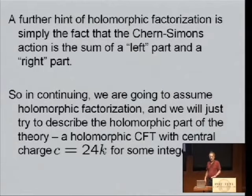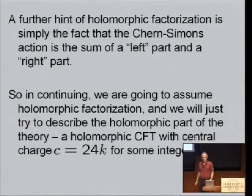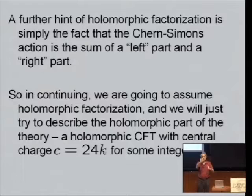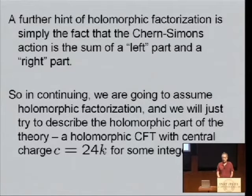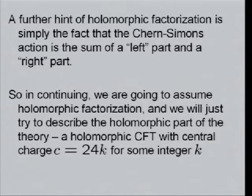Holomorphically factorized means that there are left-moving modes. The dual conformal field theory is in two dimensions, one space, one time. Conformal invariance means that all modes travel at the speed of light. Along the line, they travel either to the left or to the right. And holomorphic factorization simply means that left-moving and right-moving modes don't scatter each other. In general, conformal invariance would allow extremely complicated phase shifts, extremely complicated deformations of left and right-moving waves by each other.